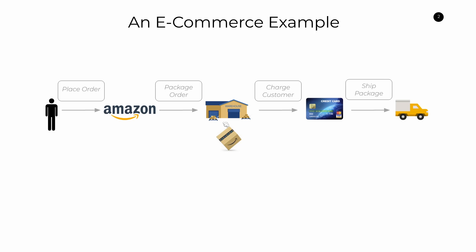Once that order is successfully packaged, it's then ready to go. Before we can send it out to our customer, we need to first charge that customer by invoking an API in a third-party service responsible for billing the customer. Once that's all done, we can move to shipping the package out to the customer by putting that package on a truck and getting a driver to deliver it. So how would we build a system that models these four sequences of steps using an event-driven architecture?